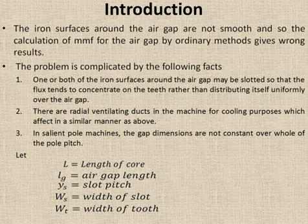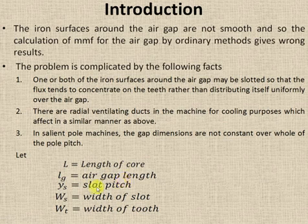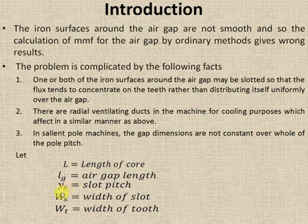Certain representations which we will be using for today's complete video session are indicated here. L is the length of core. L suffix G is the air gap length. OS is slot pitch, defined as the center-to-center distance between two slots. WS is the width of slot and WT is the width of tooth.